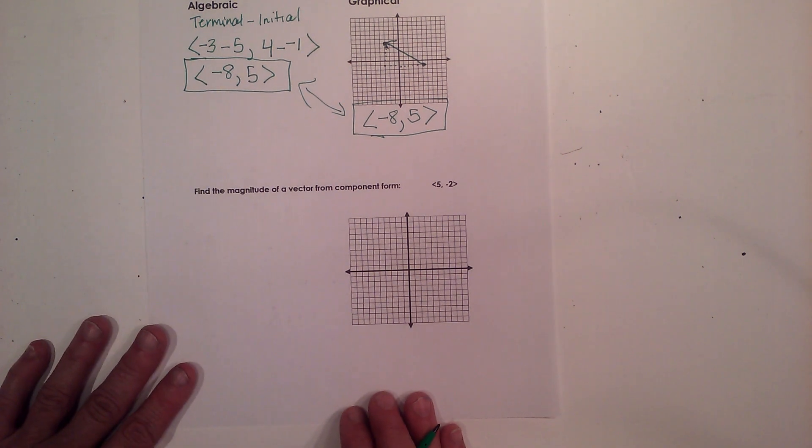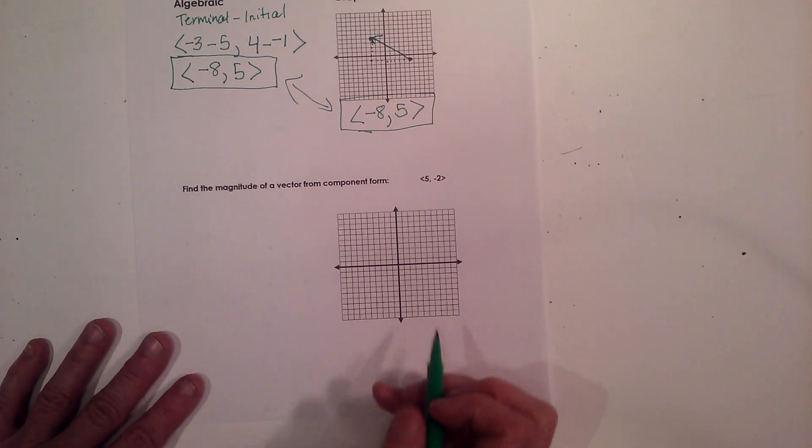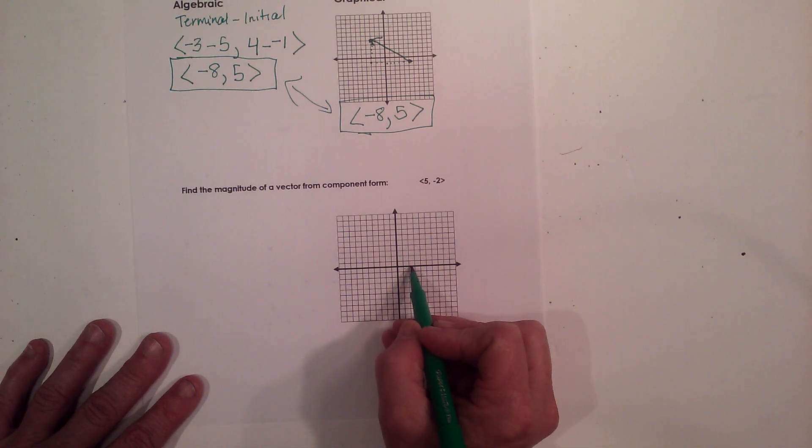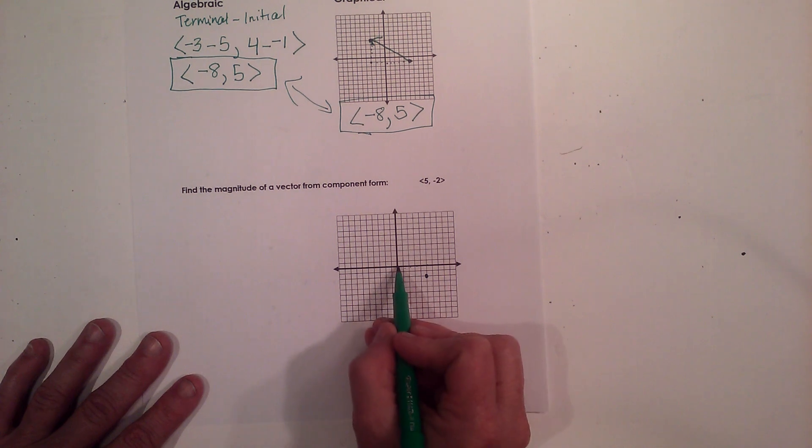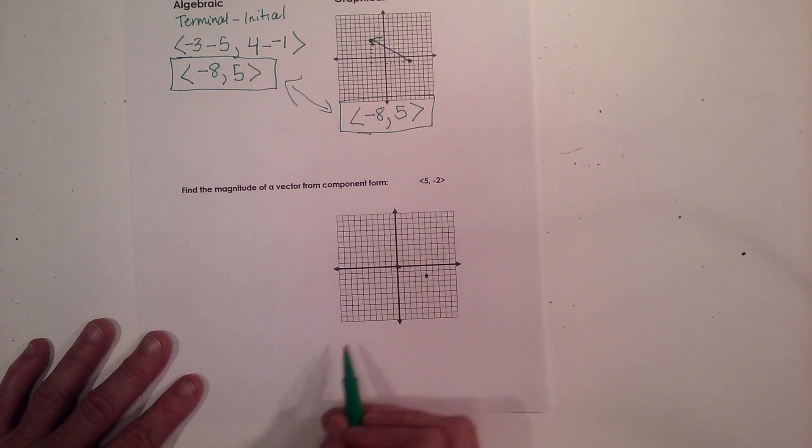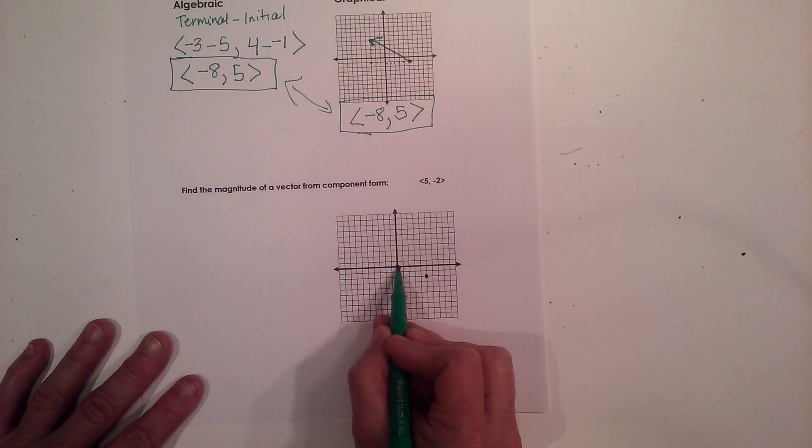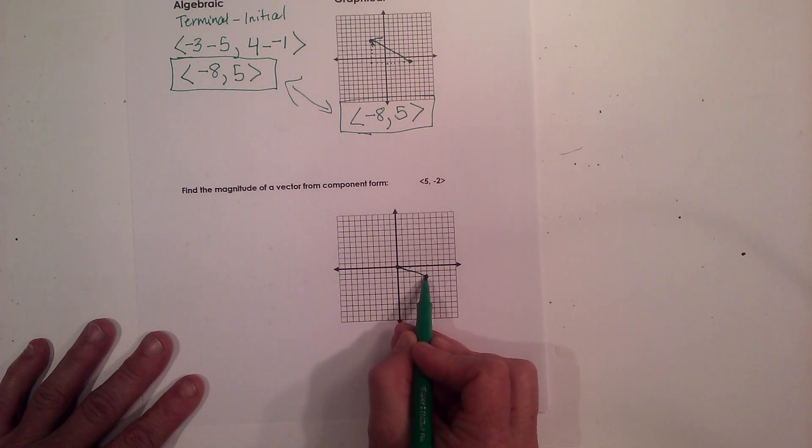So first thing I want to do is I'm going to actually plot it on my graph. So 1, 2, 3, 4, 5, negative 2. And since it is in component form, that means the initial point is at the origin and I can draw my vector.